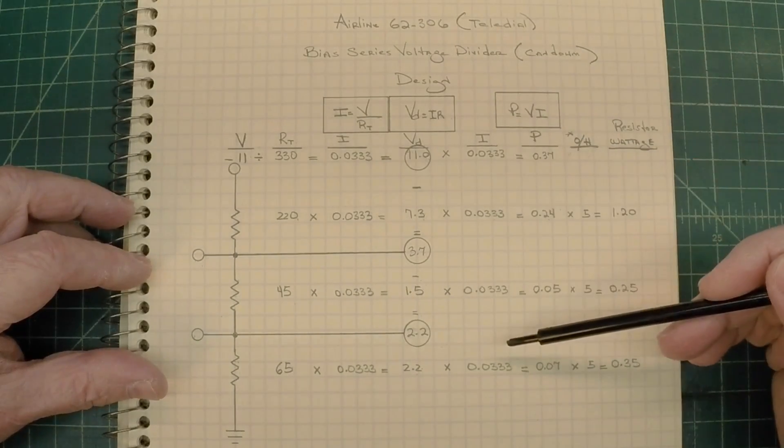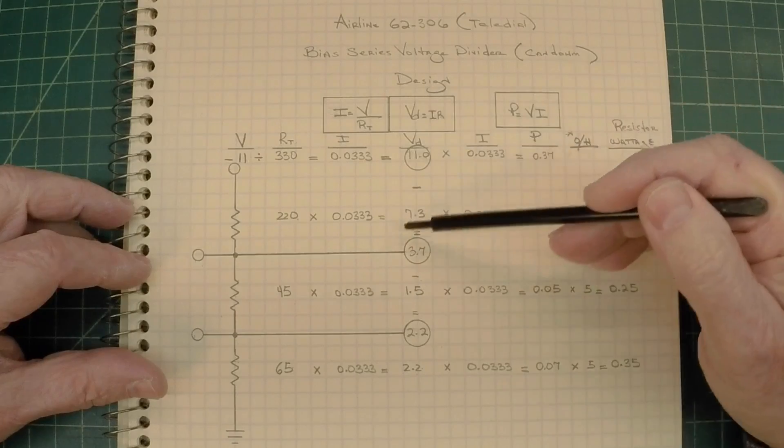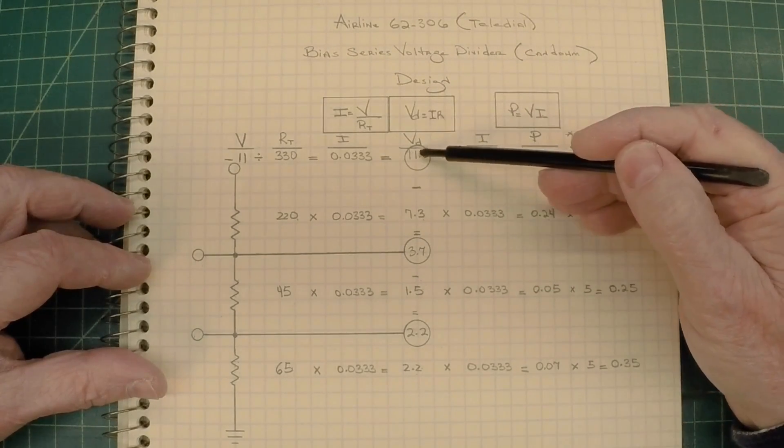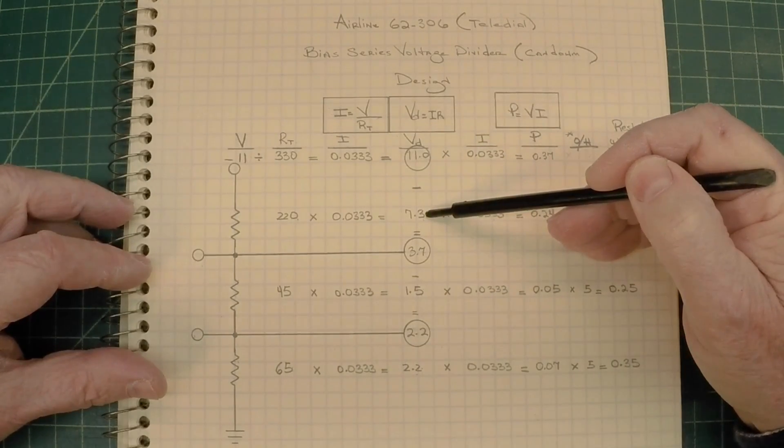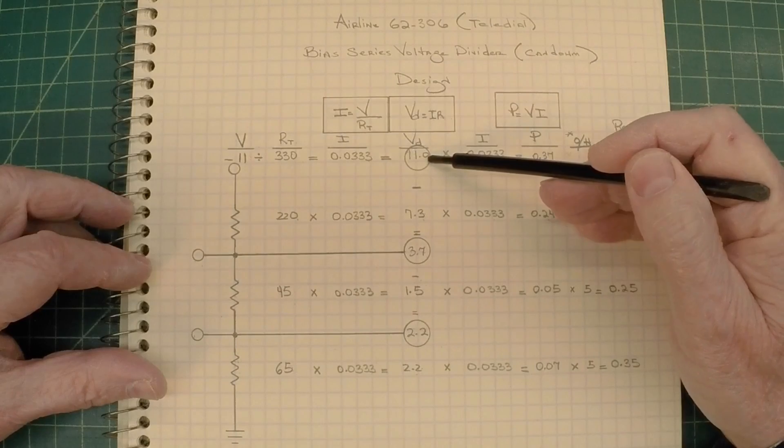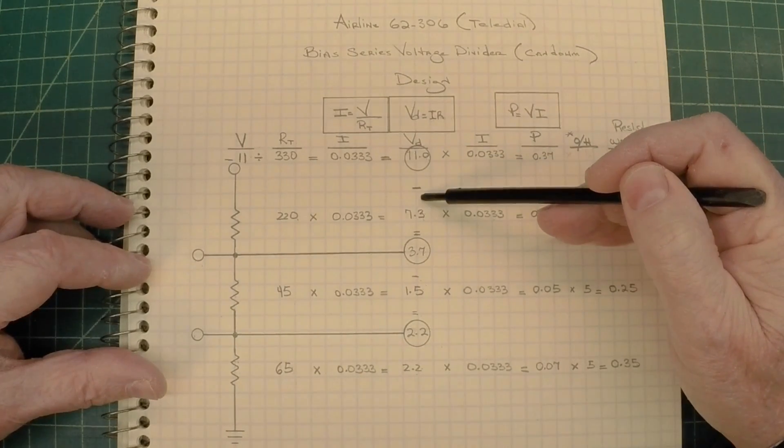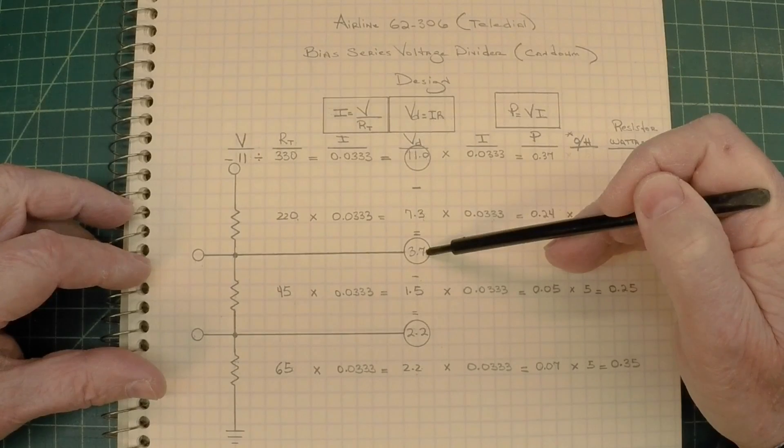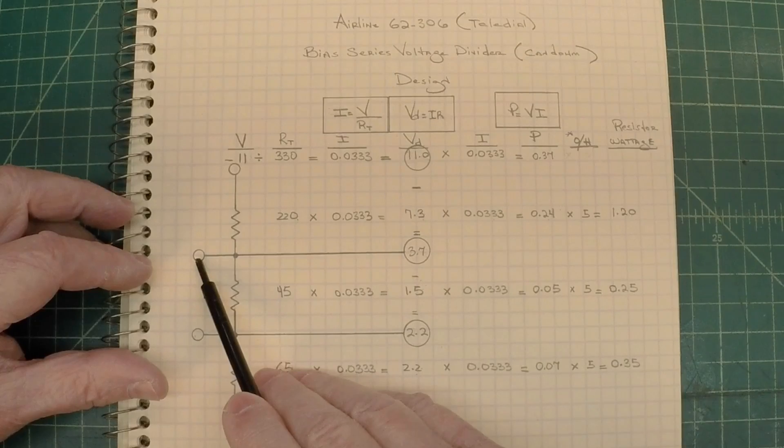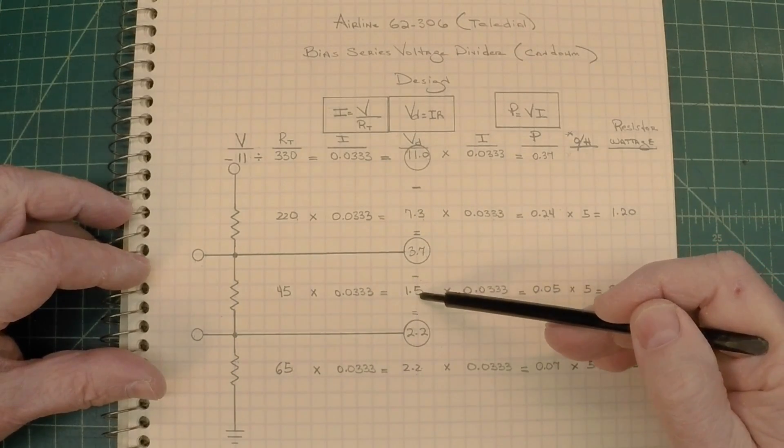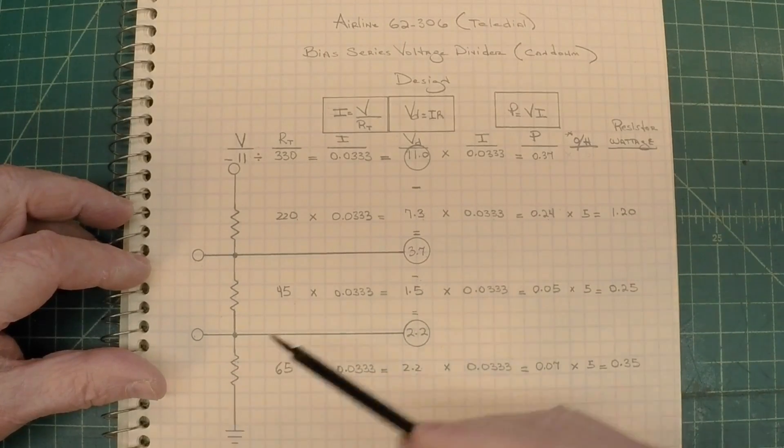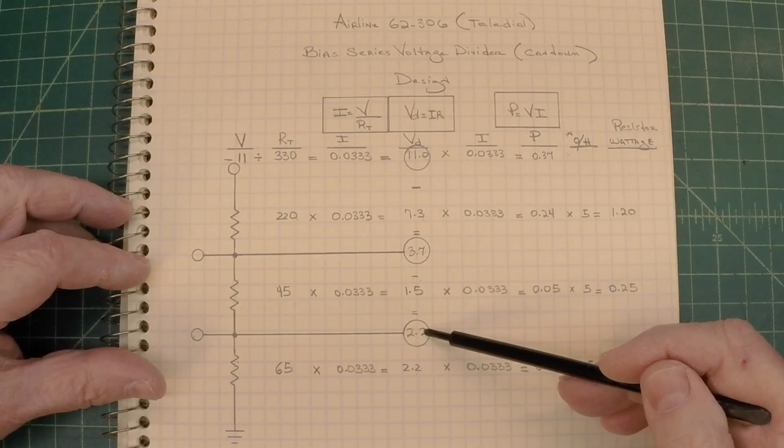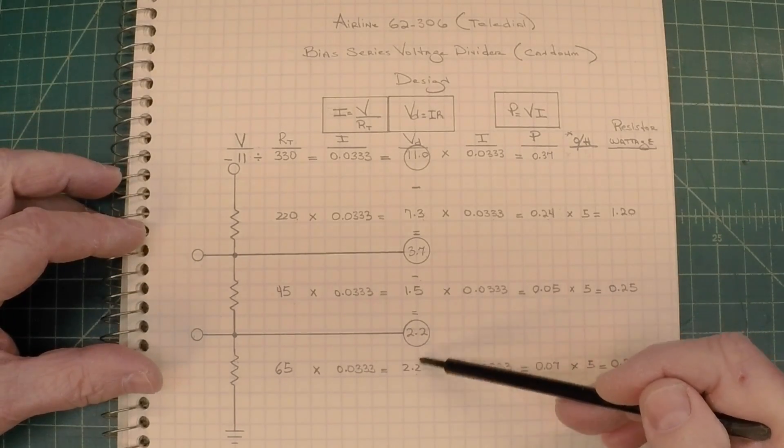We'll come back to this in just a moment, but let's look now at our tap voltages. So we started with 11 volts. We said we had a 7.3 voltage drop across the resistor, so all we do here is take 11, take away the 7.3, and that gives us 3.7 volts remaining to be worked with at this point, for this tap point here. 3.7, take away the 1.5, gives us 2.2 volts at this point to work with. These two numbers should match, and if they do, you know that you've got your math right.